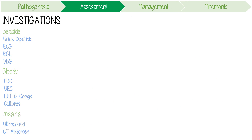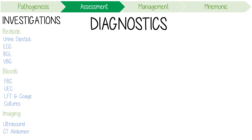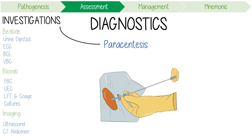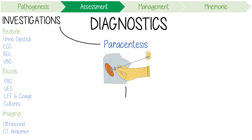Moving on to the diagnostic algorithm for spontaneous bacterial peritonitis suggested by BMJ Best Practice: if our initial tests are suggestive of SBP, we need to perform a diagnostic paracentesis. This is a procedure that removes fluid from the abdomen through a slender needle and is both diagnostic and therapeutic. The current care standard is to use ultrasound guidance. With this specimen, we should send it for cell culture and cell counts.